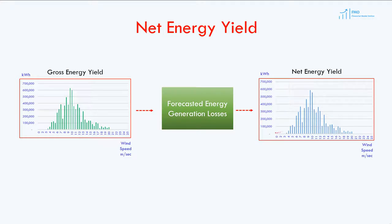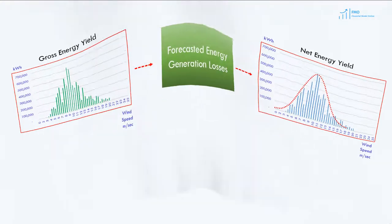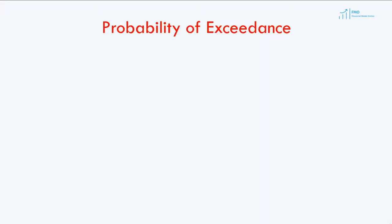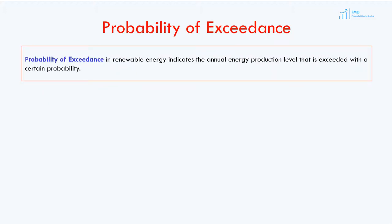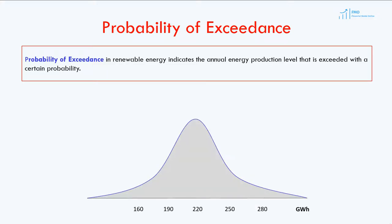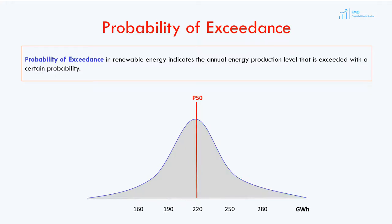After that, a probabilistic distribution is obtained, which is typically a bell curve. The bell curve is used to generate different energy production profiles, and particularly for calculating probabilities of exceedance. A probability of exceedance in renewable energy indicates the annual energy production level that is exceeded with a certain probability. Here we have a bell curve for a wind farm with different annual energy production profiles. The average annual energy production is forecasted to be 220 gigawatt hours, which corresponds to a probability of exceedance of 50%. So, P50 means there is a 50% chance that the annual energy production level of 220 gigawatt hours will be exceeded.